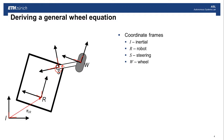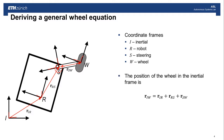If you make these definitions, then the position of the wheel with respect to the inertial frame is just the sum of these vectors: from the inertial frame to the robot frame, from the robot frame to the steering frame, and then from the steering frame to the wheel frame. These R's are displacement vectors, and the notation goes from the inertial frame to the wheel frame, and so on.